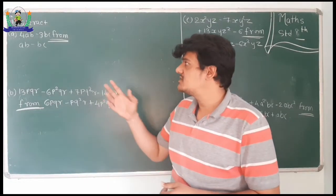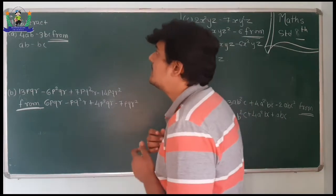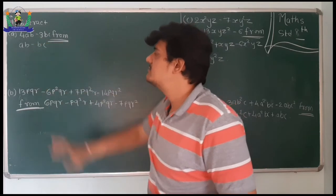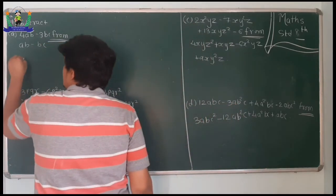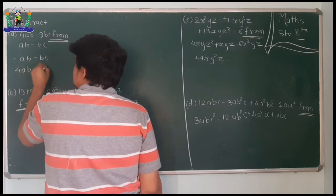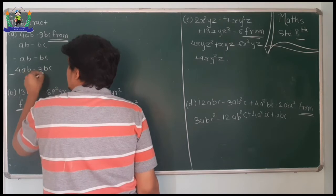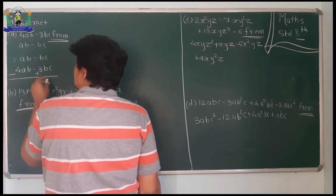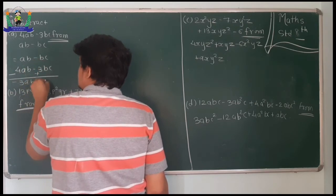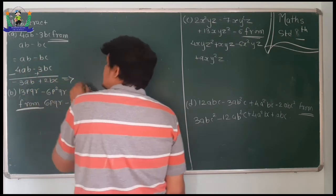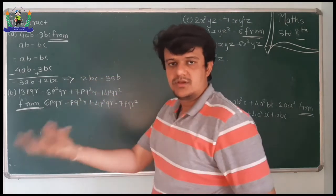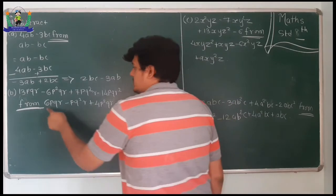Next question: subtract 4ab minus 3bc from ab minus bc. We write ab minus bc on top, then 4ab minus 3bc below, and change the signs to subtract. So minus 4ab from ab gives minus 3ab, and minus bc plus 3bc gives 2bc. Final answer: 2bc minus 3ab.